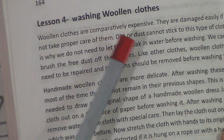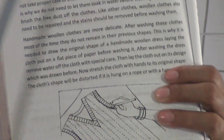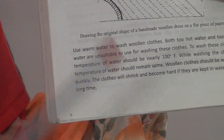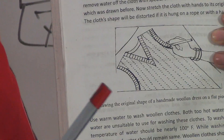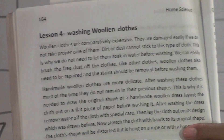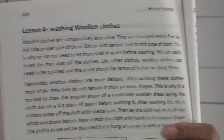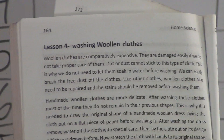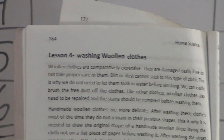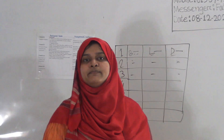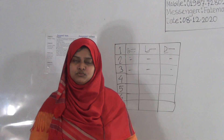From page 164, if you read this lesson you will get the idea of how to wash woolen clothes. You have to mention five correct ways. If we wash our clothes the wrong way, they can be damaged. So while washing woolen clothes, we have to maintain some rules. You can write the answer from your book.